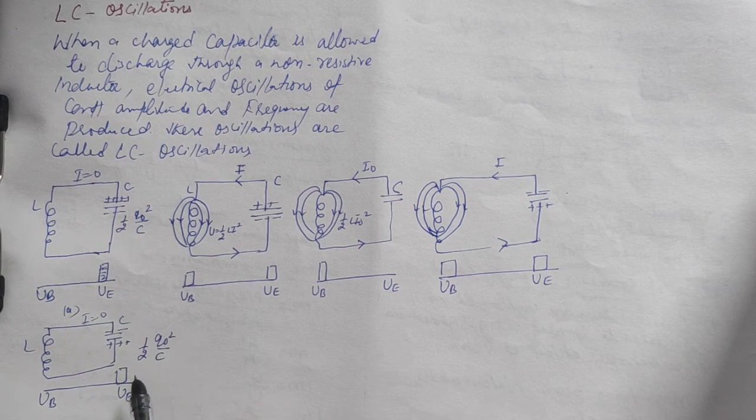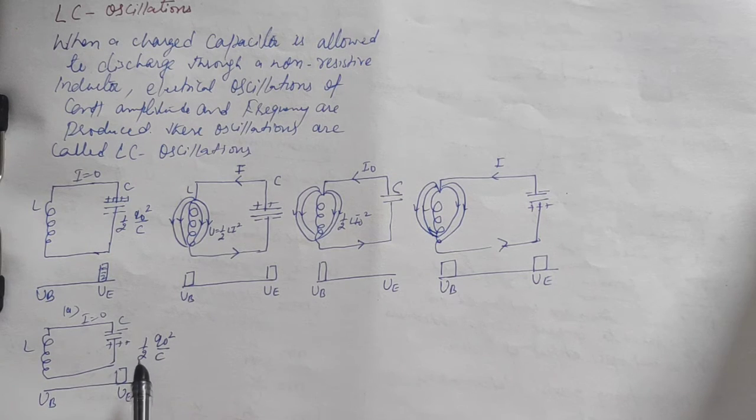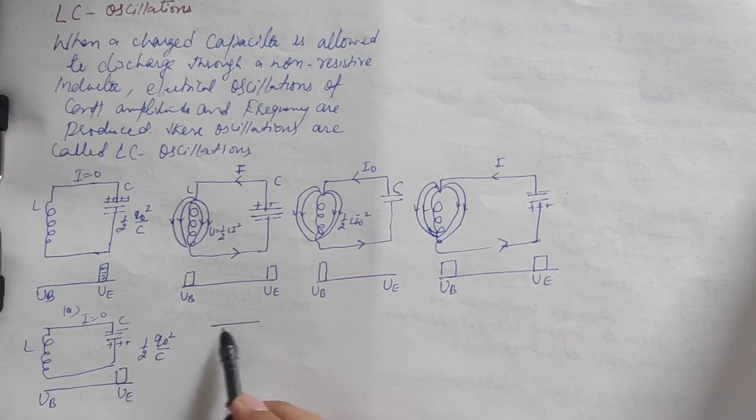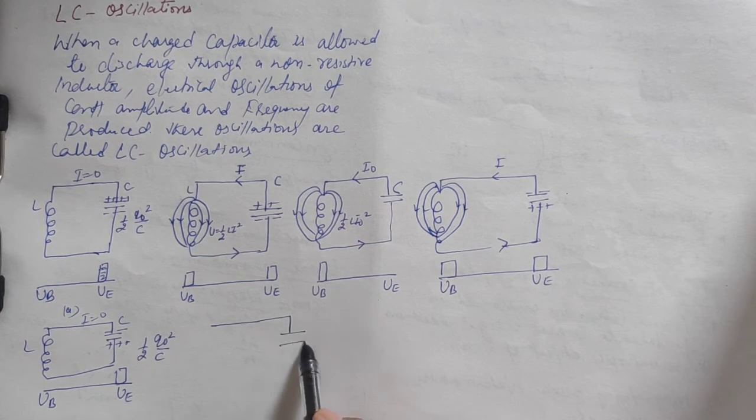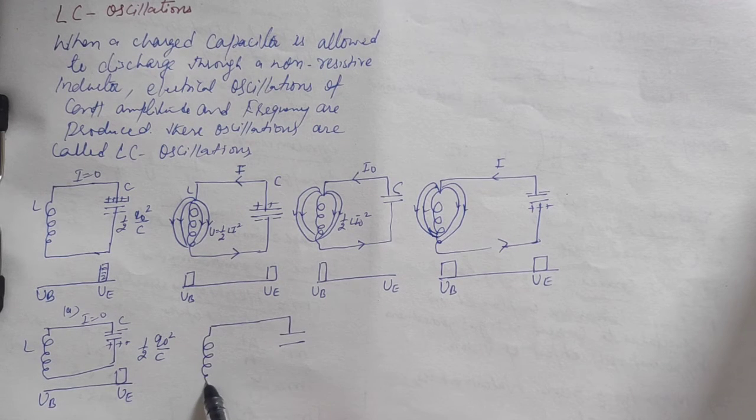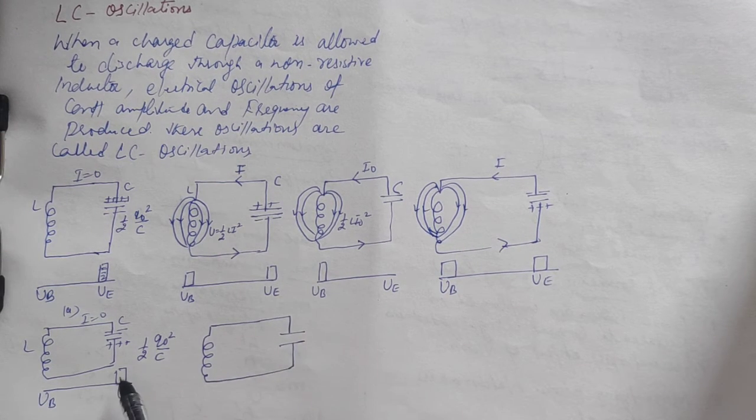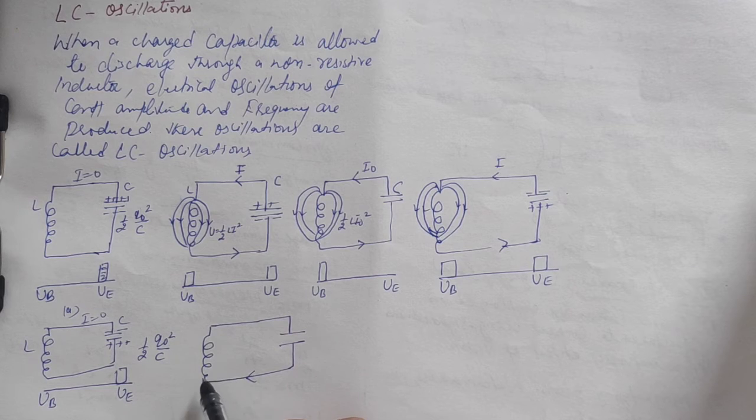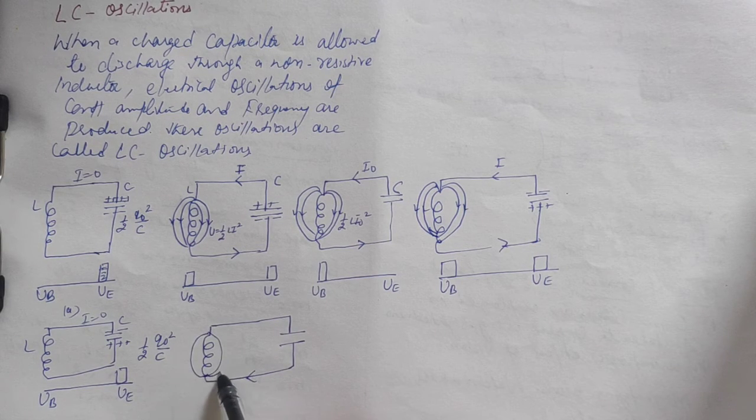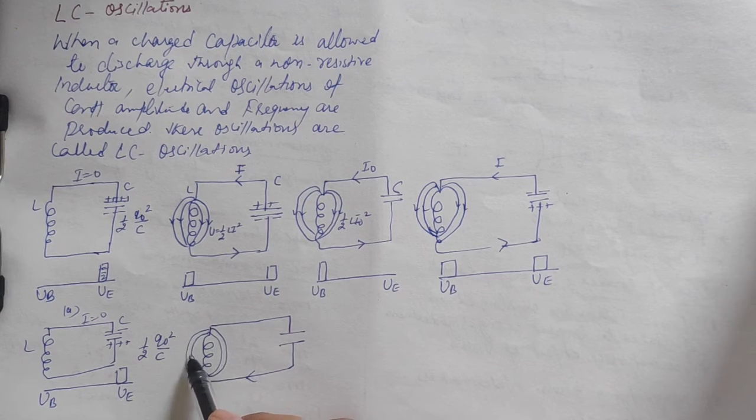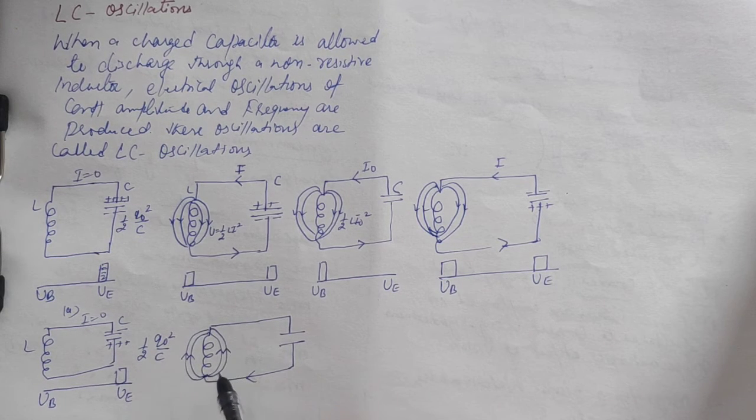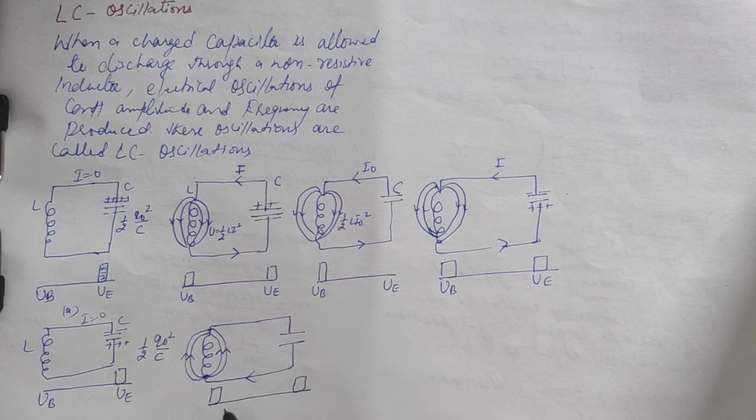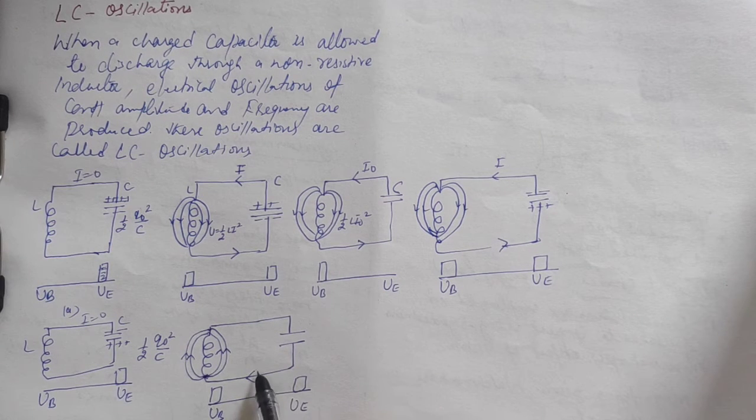The capacitor starts to discharge again. Current flows from positive to negative, creating magnetic field lines from north to south. The energy transfers again. This process repeats continuously.